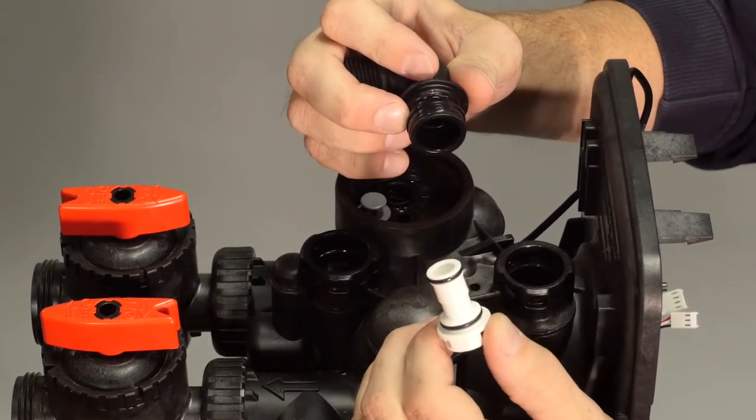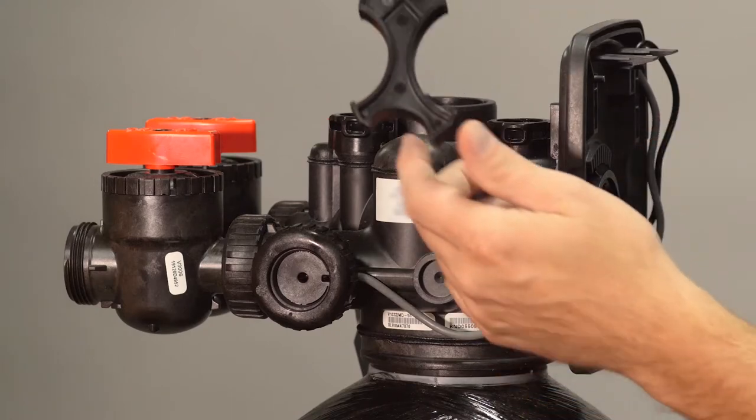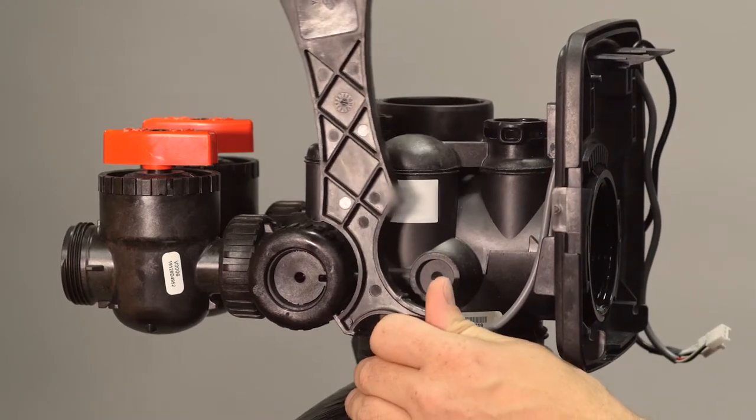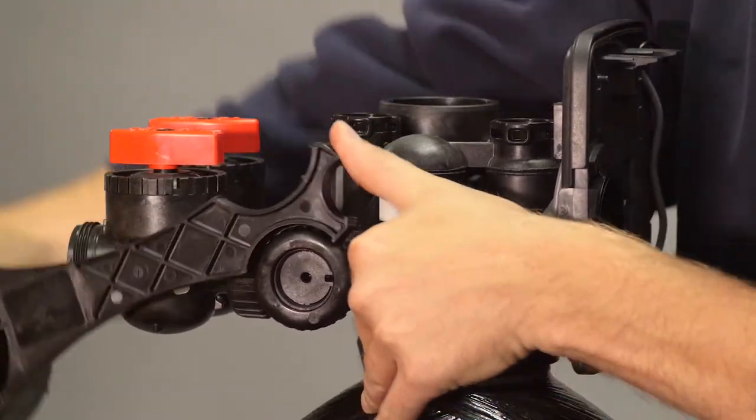To remove the meter, use the wrench to loosen and unscrew the one-inch meter nut.